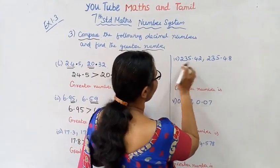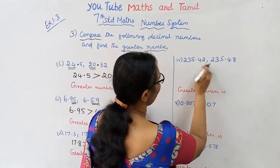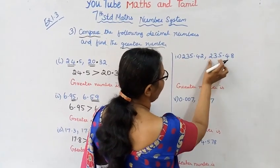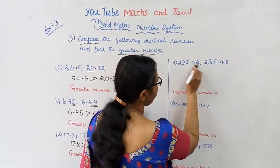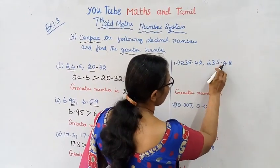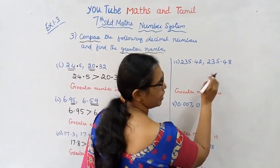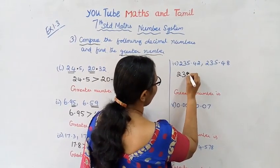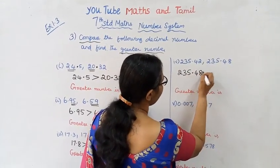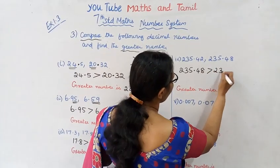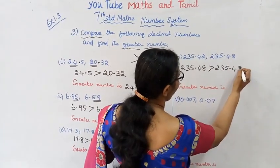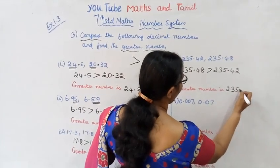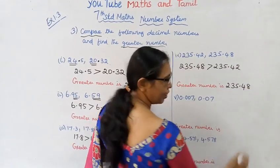Next: 235.42 and 235.48. Both have 235 before the decimal point. After the decimal, we compare 42 and 48. Since 48 is greater than 42, 235.48 is greater than 235.42. Greater number is 235.48.